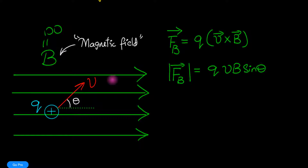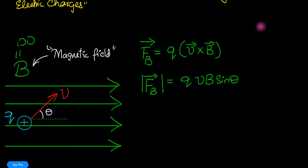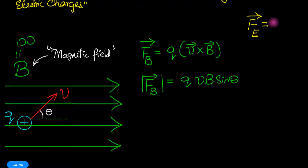That is the expression for the Lorentz force — the force on a charge due to a magnetic field. I want you to keep in mind the electric force we've discussed: the electric force F_E is simply q times E. We're going to compare these two and see how different they are.